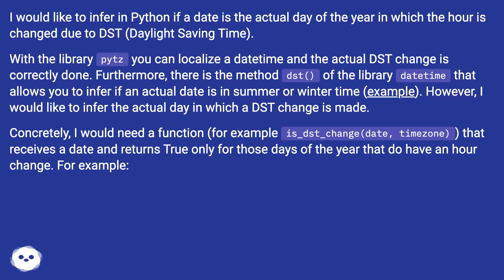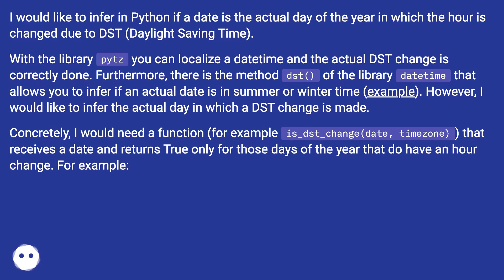With the library pytz you can localize a datetime and the actual DST change is correctly done. Furthermore, there is the method DST of the library datetime that allows you to infer if an actual date is in summer or winter time. However, I would like to infer the actual day in which a DST change is made.